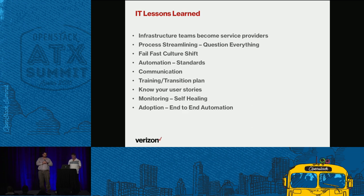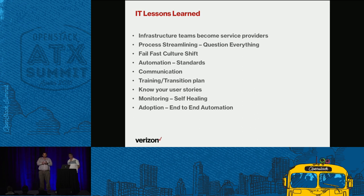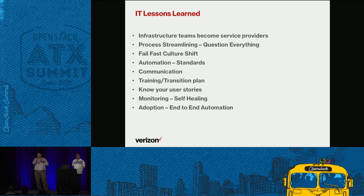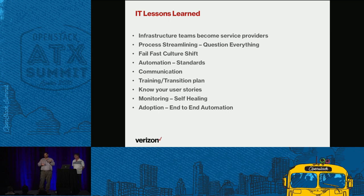Know your user stories. I don't know how many times we've delivered services and the end user said you've got 20% of what I need — not good enough, so I'm going somewhere else. You have to understand what you're building and why you're building it. Have a roadmap where you can collaborate with your end users to understand where you are and where you're going. A 20% success story should not be seen as a failure but as a move in the right direction. We have to partner and understand that it's a growth process and together we can mature it.